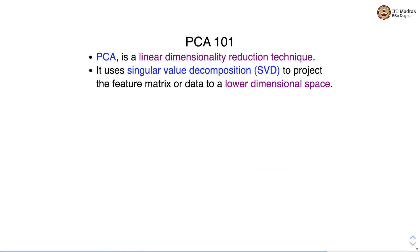Let's have a short tour of principal component analysis. PCA will be covered in greater detail from a theoretical perspective in later weeks of the machine learning techniques course. Principal component analysis is a linear dimensionality reduction technique. It uses singular value decomposition, or SVD, to project the feature matrix or data to a lower dimensional space.